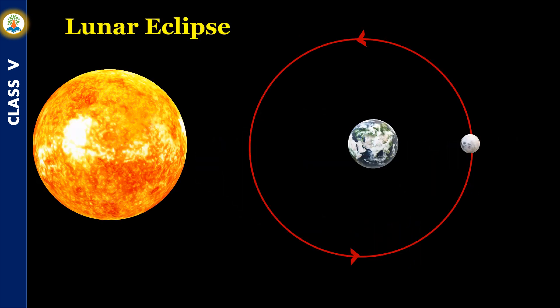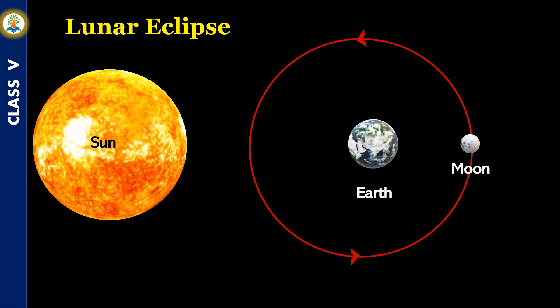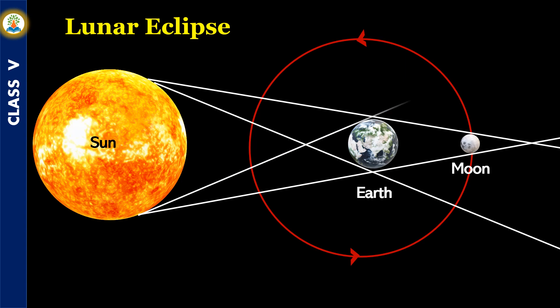A lunar eclipse occurs when the Earth comes in between the Sun and the Moon. It blocks the path of sunlight from reaching the Moon and creates a shadow. In a total lunar eclipse, the Moon is not visible at all.